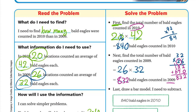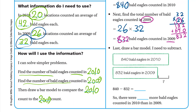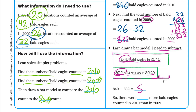Now let's compare the two answers by drawing a bar model. We have 840 bald eagles in 2010 and 832 in 2009. We need to find the difference — that missing part. Since we know the whole (840) and one part (832), we subtract: 840 minus 832.